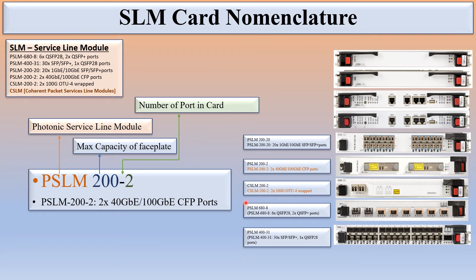The last digit indicates the number of ports in the card. So PSLM 200-2 means this is the Photonic Service Line Module with a maximum capacity of 200 Gbps and 2 ports — these 2 ports can either be 40 GB or 100 GB. PSLM 680-8 similarly has a maximum capacity of 680 Gbps and 8 ports. CSLM stands for Coherent Packet Service Line Module.